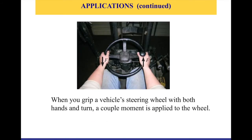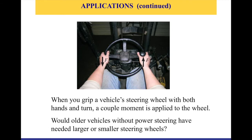With a steering wheel, when you turn it counterclockwise, the forces are equal but opposite in direction, with a perpendicular distance between them — and that is actually the definition of a couple. When you grip a vehicle steering wheel with both hands and turn, a couple moment is applied to the wheel because of the two forces and the distance between them. A question: would older vehicles without power steering have needed larger or smaller steering wheels?